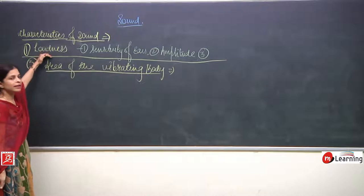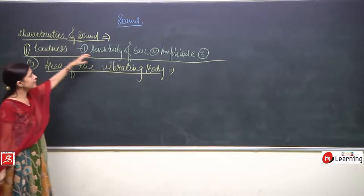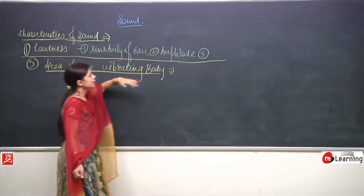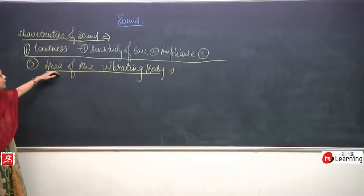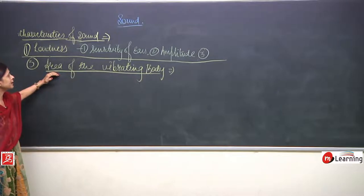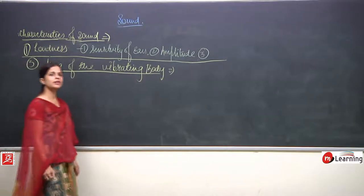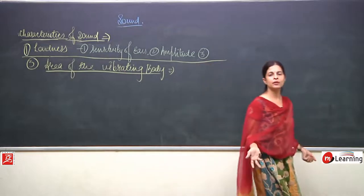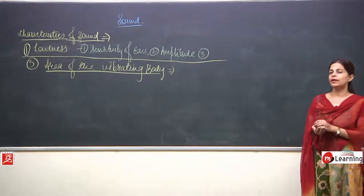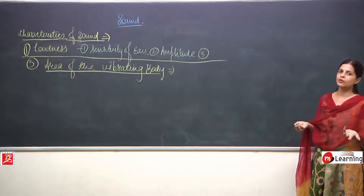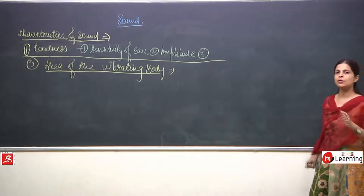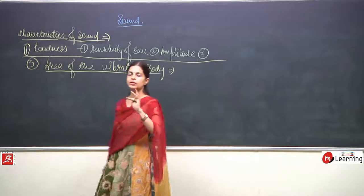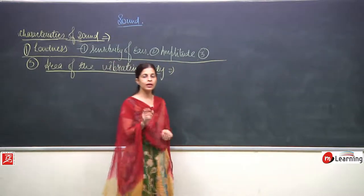When talking about loudness, we've discussed sensitivity of ears and amplitude. Now the third point is area of the vibrating body. If the area is greater, more sound will be produced. If the area is less, lesser sound will be produced. Take the example of a bell.